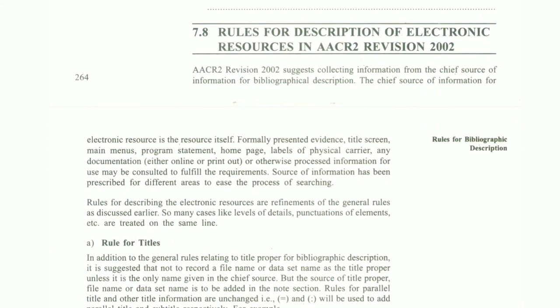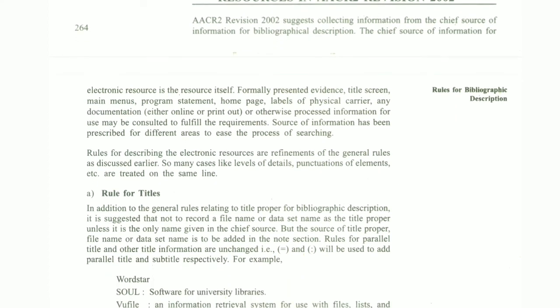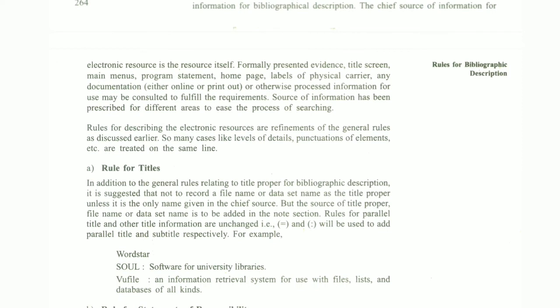The next heading covers the rules for description of electronic resources in AACR-2 Revision, which came in 2002. This revision suggests collection of information from the chief source of information for bibliographic description. The chief source of information for electronic resources is the resource itself, as formally represented — including evidence such as the title screen, main menu, program statement, and many more. Such information has been prescribed for different areas.